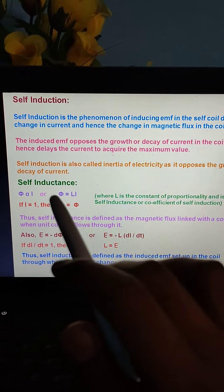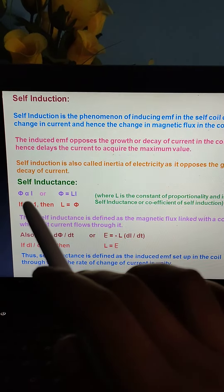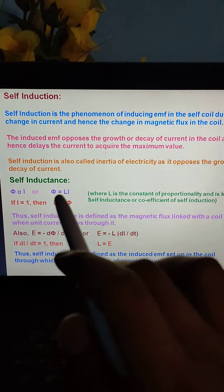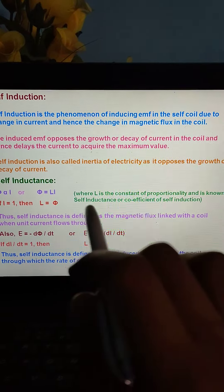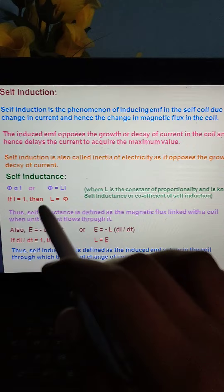Self inductance is defined as flux proportional to current, so flux equals Li, where L is the constant of proportionality known as self inductance or coefficient of self inductance.